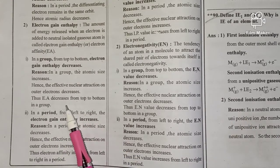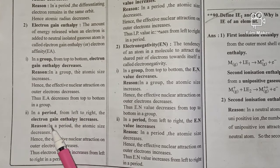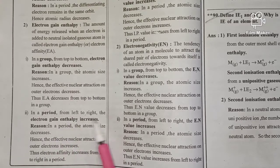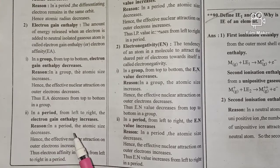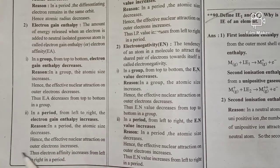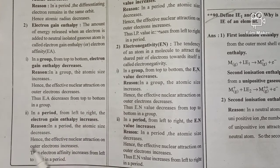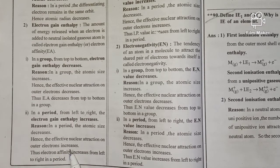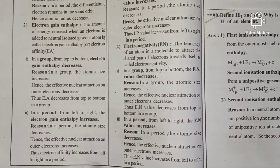In a period, from left to right, the electron gain enthalpy increases. The atomic size decreases in a period. Hence, the nuclear attraction on outer electrons increases. Thus, electron affinity increases from left to right in a period.